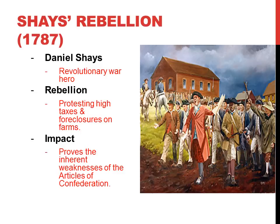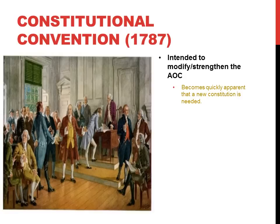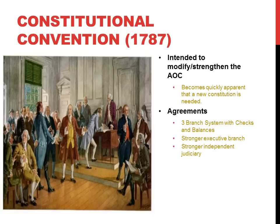In response to the overwhelming weaknesses of the Articles of Confederation, highlighted most by Shays' Rebellion, members from all states except Rhode Island sent delegates to the Constitutional Convention in Philadelphia. Their original purpose was simply to modify or strengthen the Articles, but it became quickly apparent that a new constitution would be necessary. Each of the delegates had several agreements, including the need for a three-branch system with checks and balances, a stronger executive, and a stronger independent judiciary.